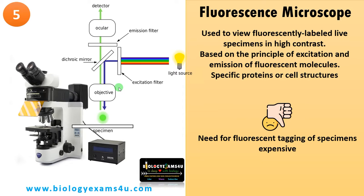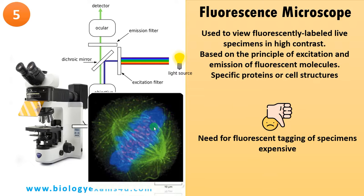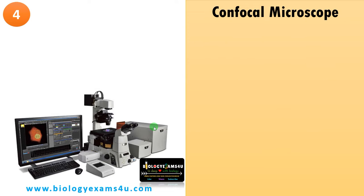The downside is the need for fluorescent tagging of the specimen, and it is very expensive. For example, in an image of mitosis: the green spindle fibers are labeled using a green fluorescent antibody, the blue condensed chromosomes are labeled using DAPI, and the red DNA is labeled using a red fluorescent antibody. Different cell structures can be precisely viewed using this fluorescence microscope.